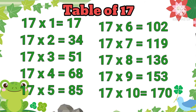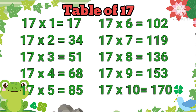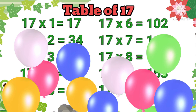17 sevens are 119. 17 eights are 136. 17 nines are 153. 17 tens are 117. Very good, children!